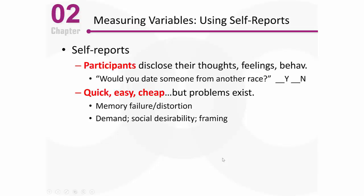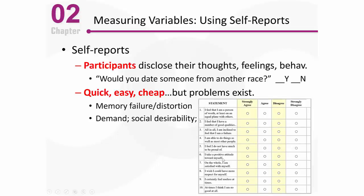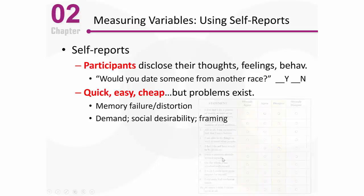Let's talk about a few other problems: demand characteristics, social desirability, and framing. With demand characteristics — think about the Rosenberg Self-Esteem Scale. Not one item asks specifically about self-esteem, but by looking at them you can pretty quickly tell the researcher is trying to measure self-esteem. As a research subject you might think, 'I know what they're trying to do — they probably want me to answer like this.' We've already lost that subject. That's demand characteristics — the researcher has created a condition demanding the subject respond in a particular way.